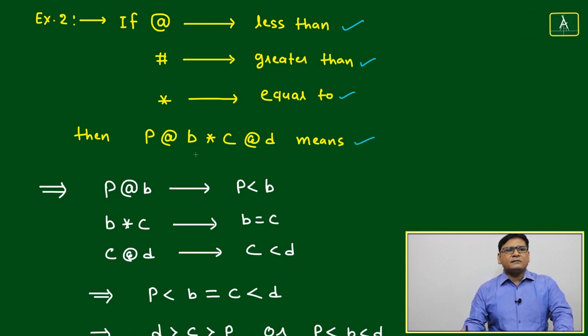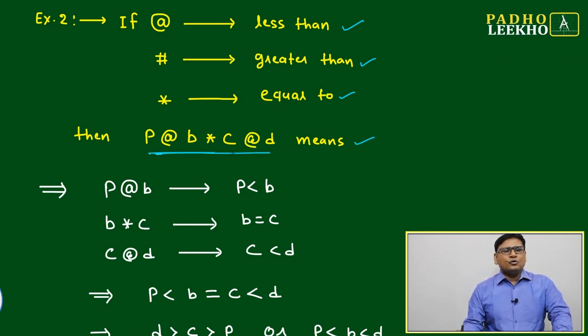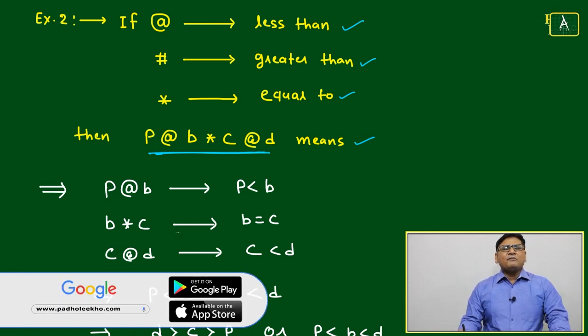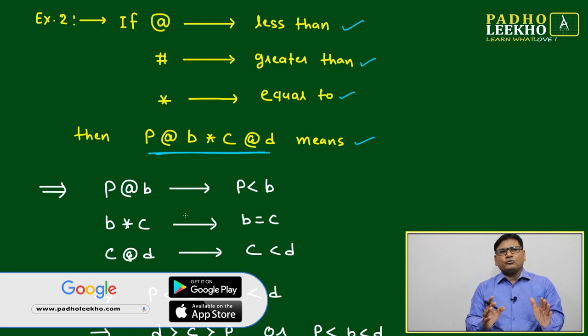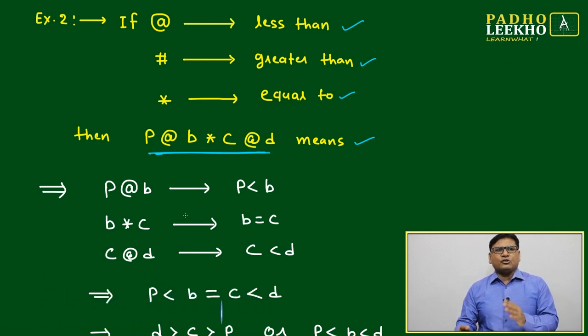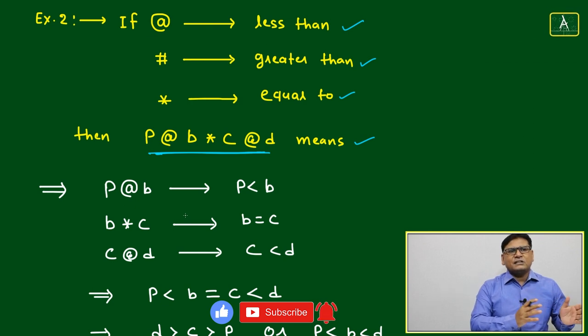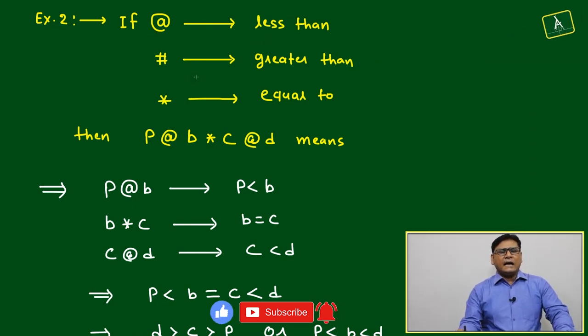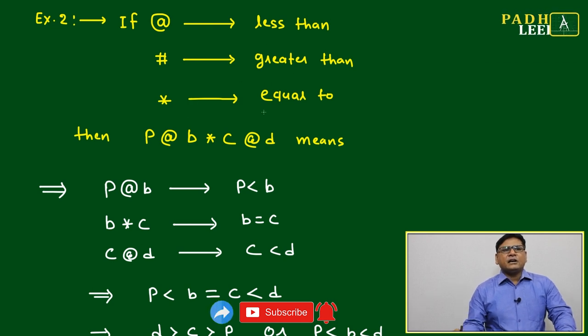Very simple, we have to just break down. If it is given combinedly three or four relations together or three or four mathematical operations together, just we have to break down. @ means less than, # means greater than, and * means equal to.